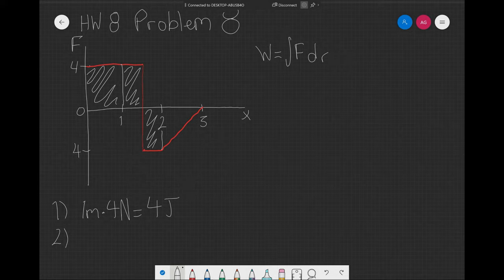So in this case, you would be having the base, 0.5 meters times 4 newtons, minus 0.5 meters times 4 newtons, and that's 0 joules.